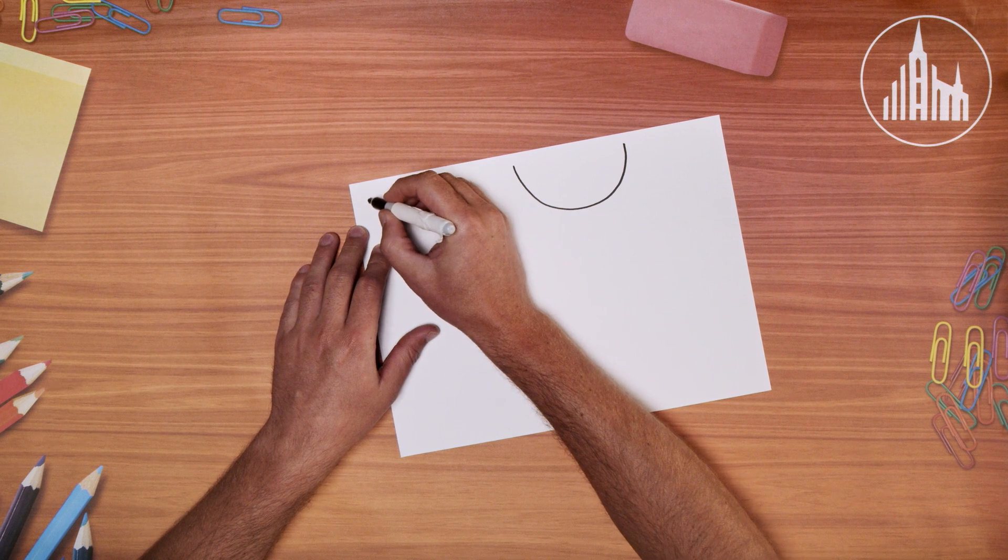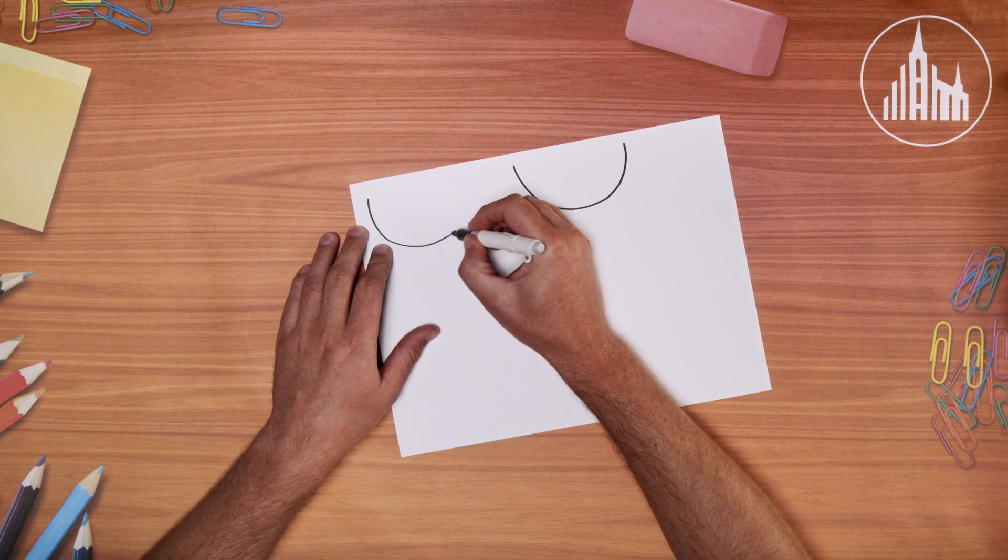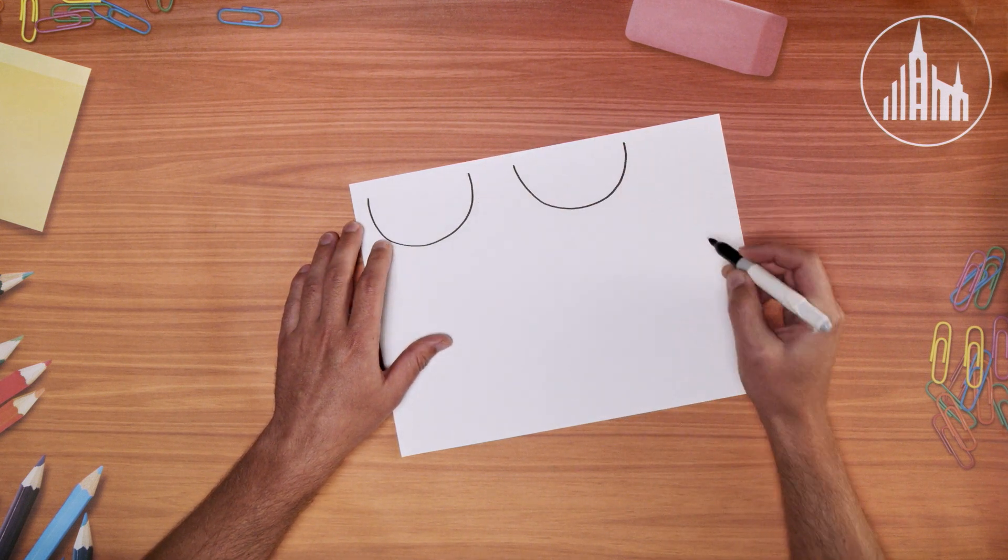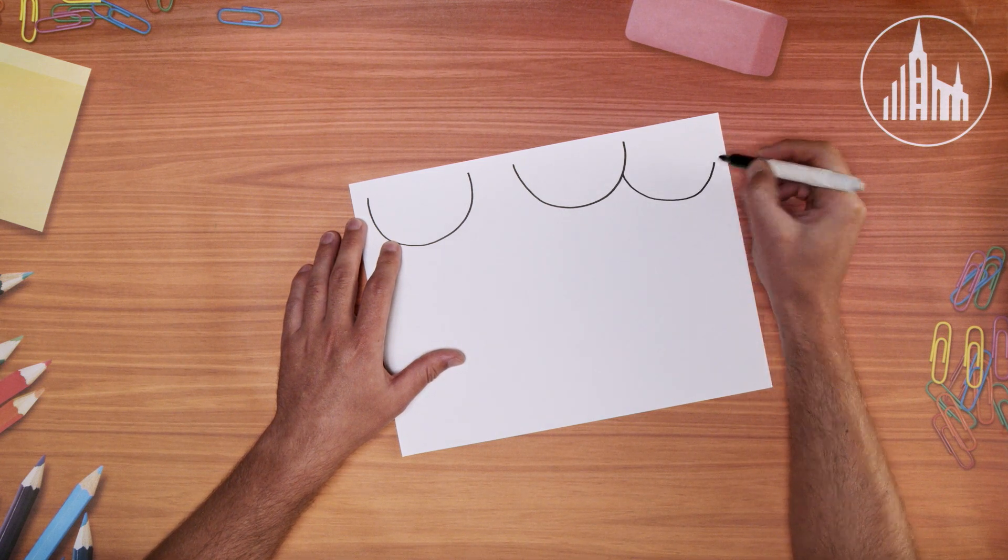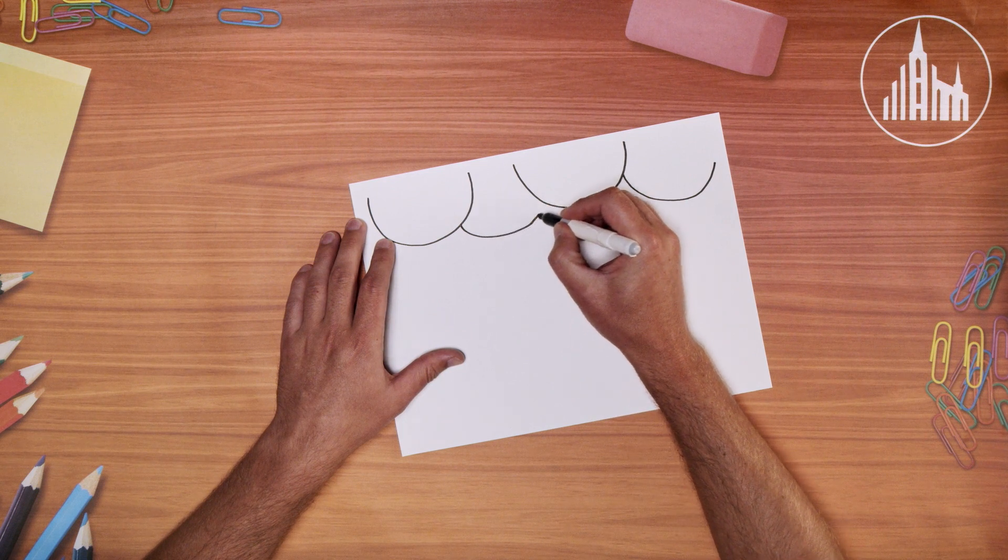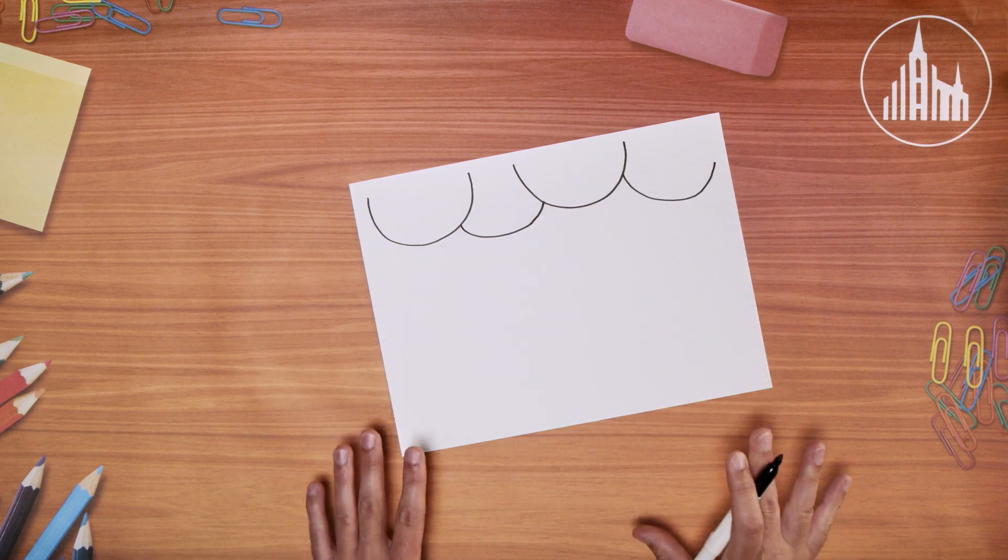And we're going to do a few of these circles in different places at the top of our page. And these are the canopies or the tops of the trees. So I'm going to just draw a couple more here. All right, those are going to go on the very top.